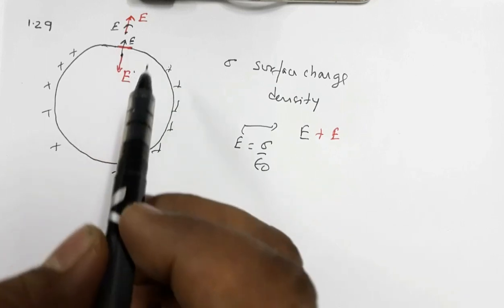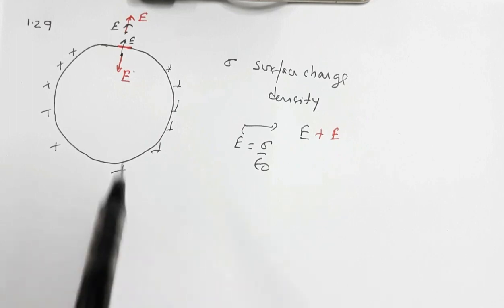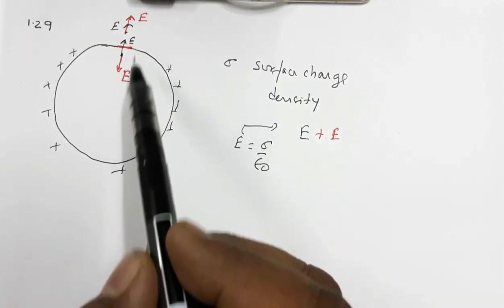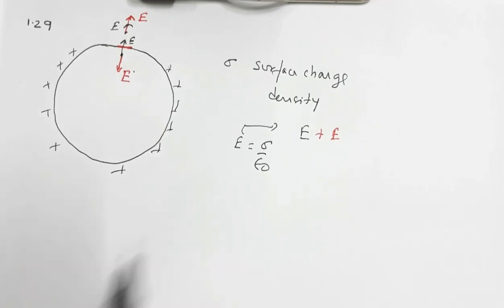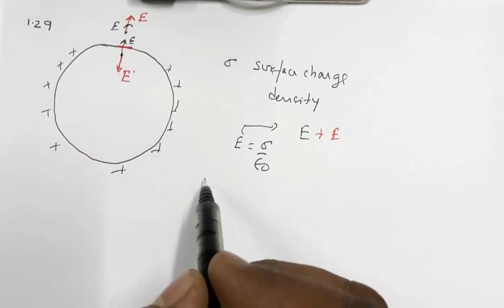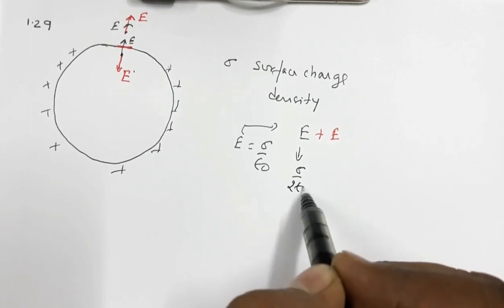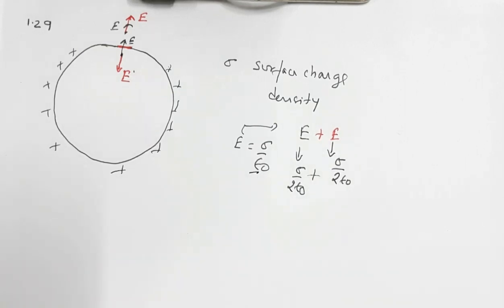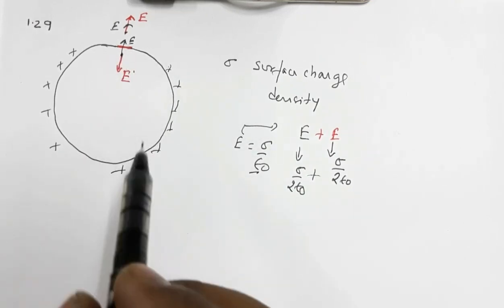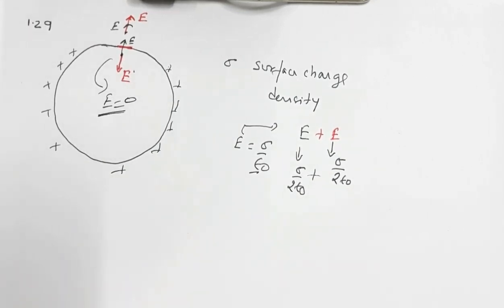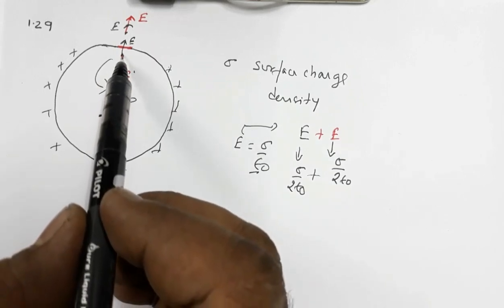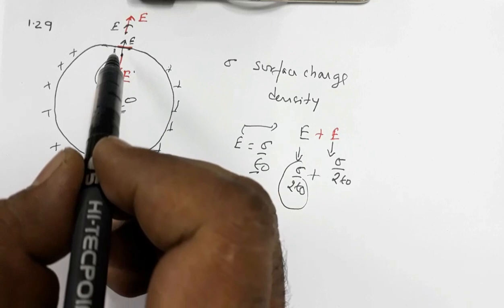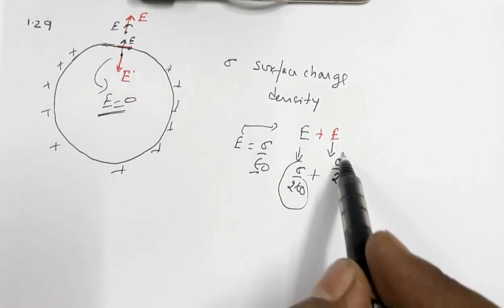This resultant σ/ε₀ is the sum of the two contributions. In the interior region the resultant is zero because the two fields are in opposite directions. For the outer region, each contribution must have magnitude σ/(2ε₀), because adding two equal values of σ/(2ε₀) gives σ/ε₀. This means the electric field due to the red segment has magnitude σ/(2ε₀), and the field due to the black (rest) part is also σ/(2ε₀).